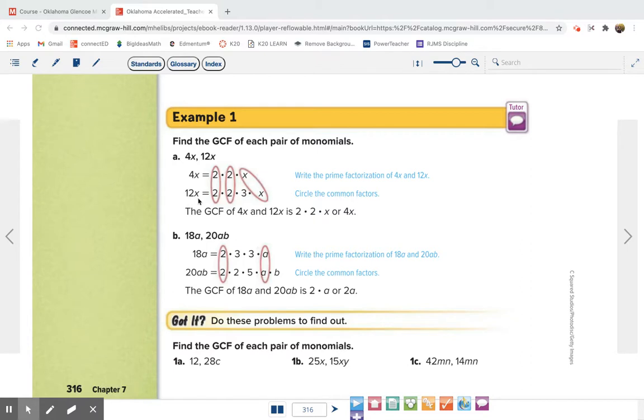So then 12x, we do the same thing. Since it's even, I always just start out by dividing by 2. 12 divided by 2 is 6. 6 is not prime, so I have that 2. 6 can be 2 times 3. So there's 2 times 3. So if I go back and check, 2 times 2 is 4. 4 times 3 is 12. So we are breaking the number down into only prime numbers, and then we have times x.